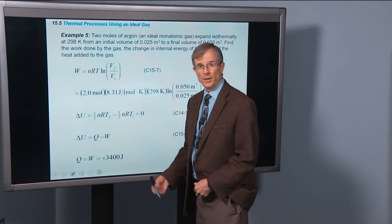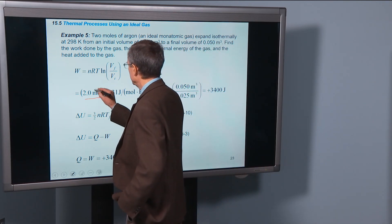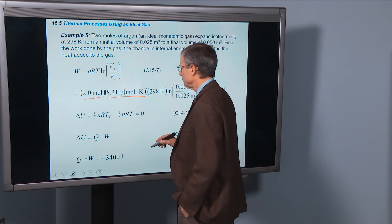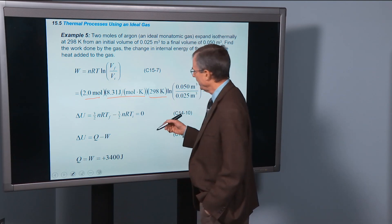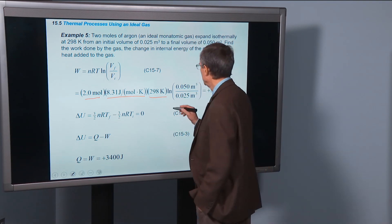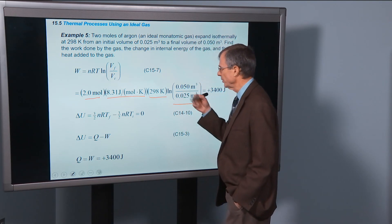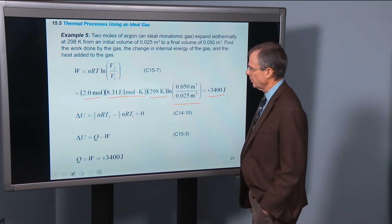Work done is easy. We already have a formula for it. We've got 2 moles, 8.31 joules per mole kelvin, 298 K, the constant temperature, times the logarithm of the ratio of those two volumes, gives 3400 joules.